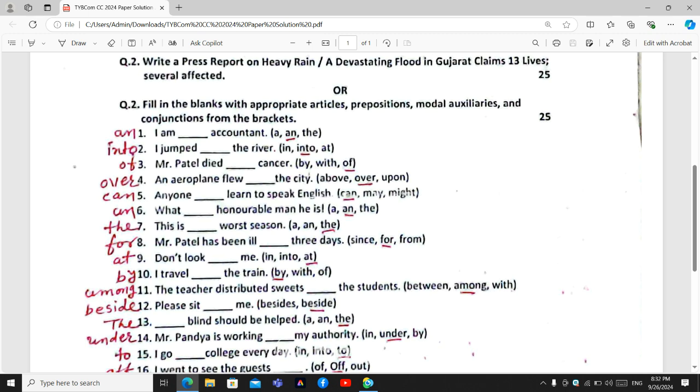Blank number one. I am blank accountant. There are three options in it and they are articles A and D. The right option is an accountant because there is only one accountant and the spell of the word accountant starts with A.